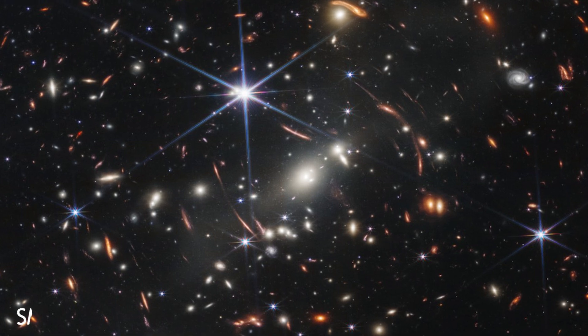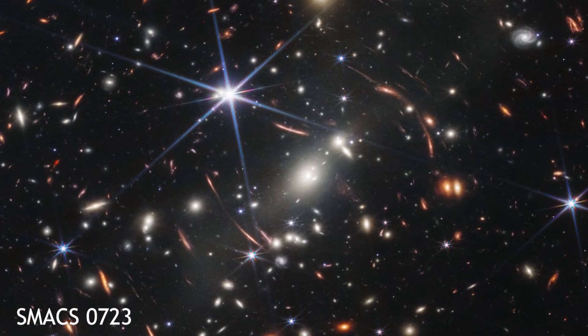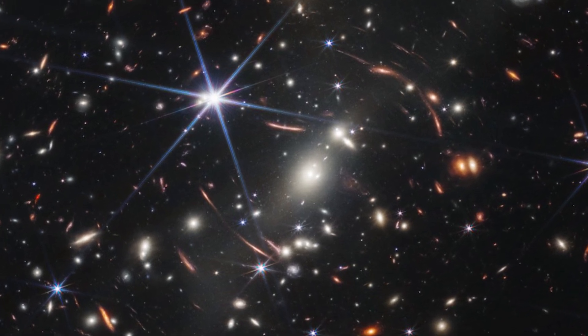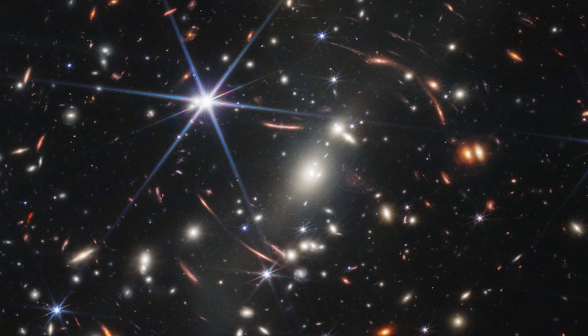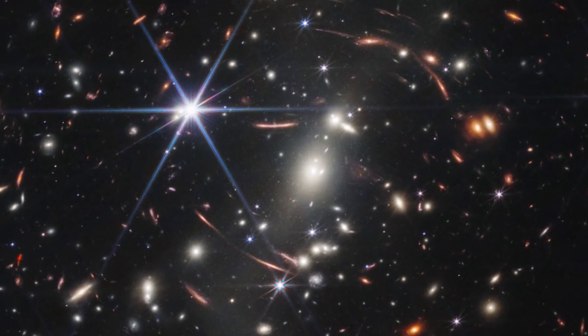The image shows the galaxy cluster SMACS-0723 as it appeared 4.6 billion years ago. The combined mass of this galaxy cluster acts as a gravitational lens, magnifying much more distant galaxies behind it. Webb's NIRCAM has brought those distant galaxies into sharp focus.